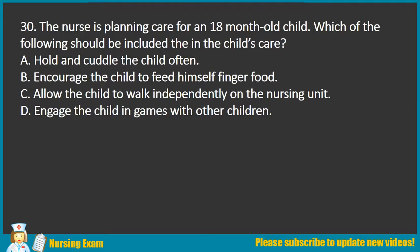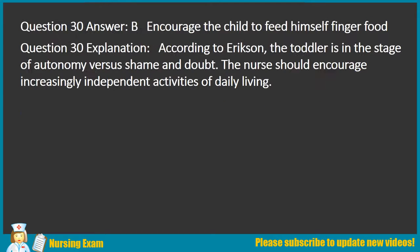Question 30. The nurse is planning care for an 18-month-old child. According to Erikson, the toddler is in the stage of autonomy versus shame and doubt. The nurse should encourage increasingly independent activities of daily living.